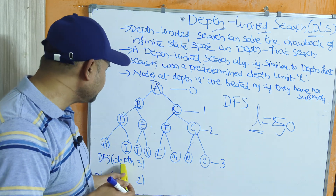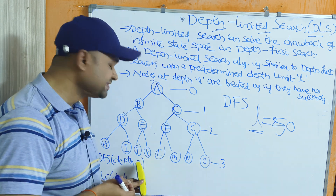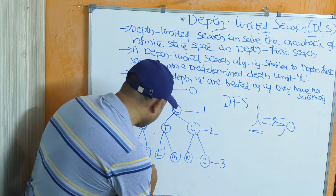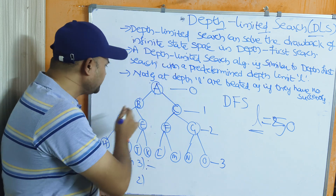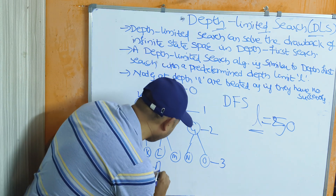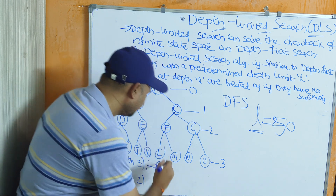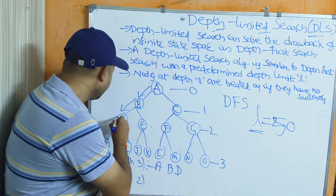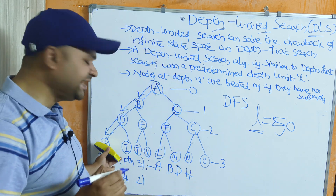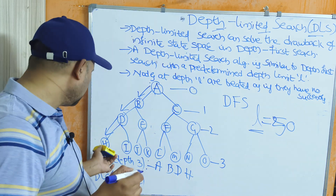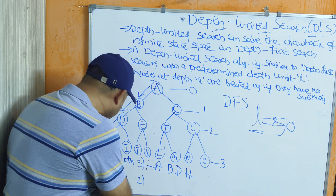In DFS, we move to the deepest level, which is 3 here. Starting from the root node A, we explore the path: A to B, then B to D, then D to H. H is a dead end — it has no children.